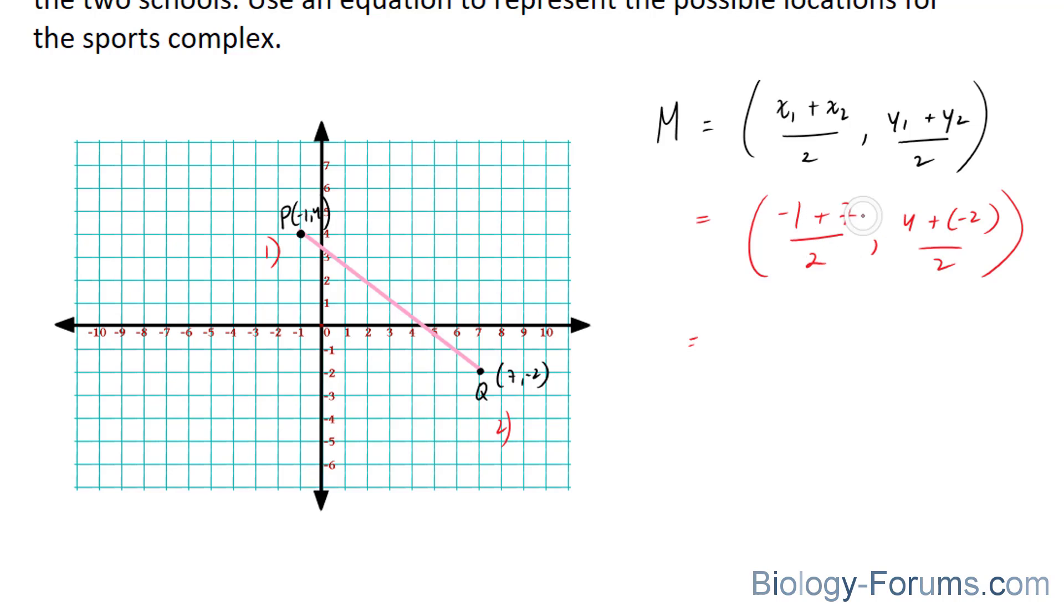Negative 1 plus 7 is equal to 6, divided by 2 is 3. 4 minus 2 divided by 2 is equal to 1. So our midpoint is at 3 and 1, as it appears.